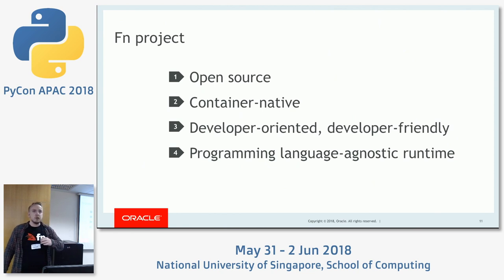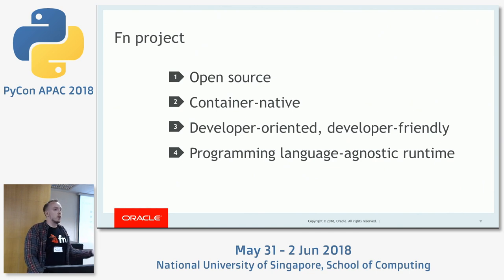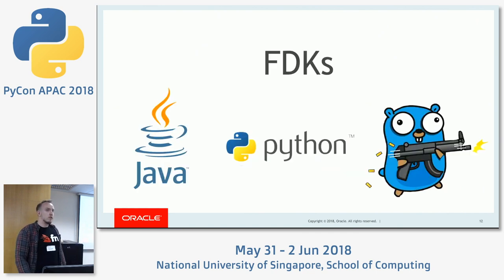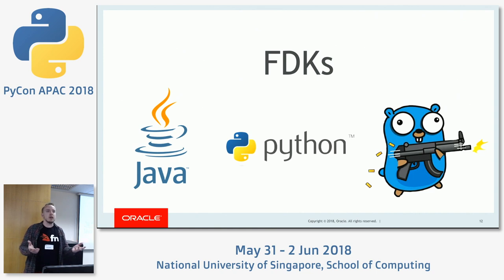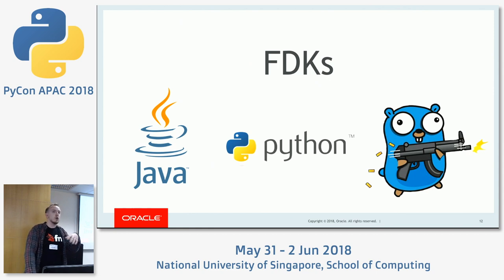And also, as I told you, it's completely runtime agnostic. So you can use Python, you can use Java, Node, or whatever programming language you would like to use, since it's container-native. Whatever you want to put in a container can be a function. This is what we started with — the FDK, or Function Development Kits. Basically those are a set of libraries for different languages in order to focus the development on functions, not on the interaction protocol between the Fn platform and the container. You'll probably use the FDK in order to make development simpler and hide protocol interaction.